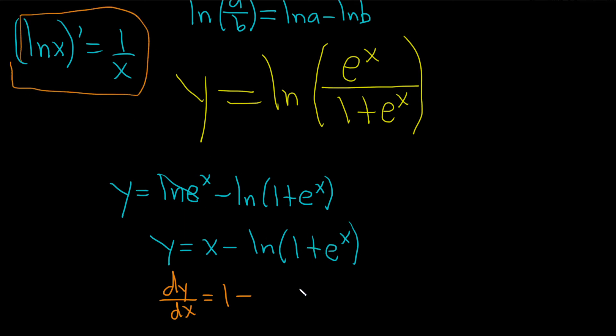So it's 1 over whatever's there. So 1 over 1 plus e to the x. And then you have to multiply by the derivative of the inside. That's what the chain rule says. So it's times the derivative of this. So the derivative of 1 is 0. And the derivative of e to the x is e to the x. So you just get e to the x.